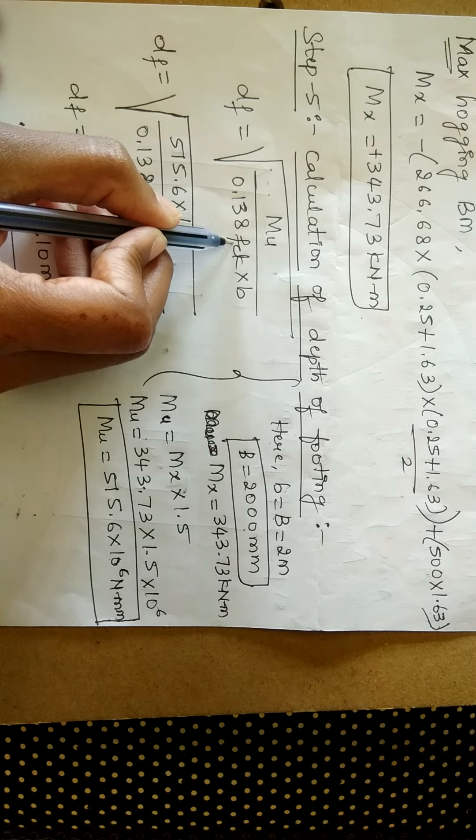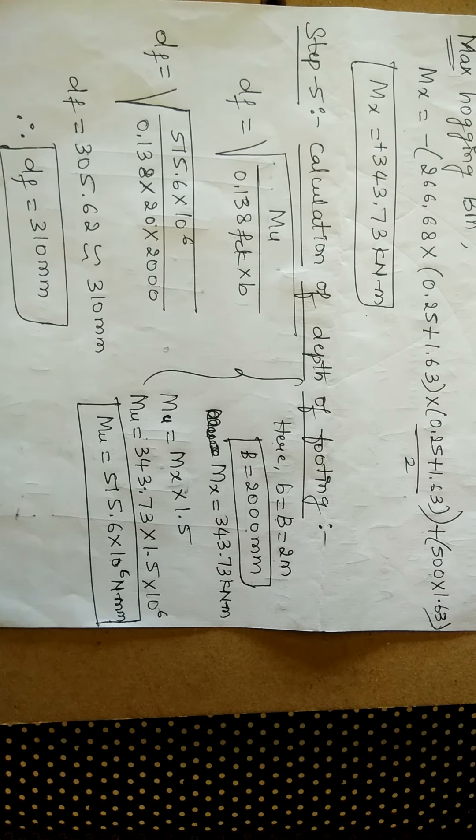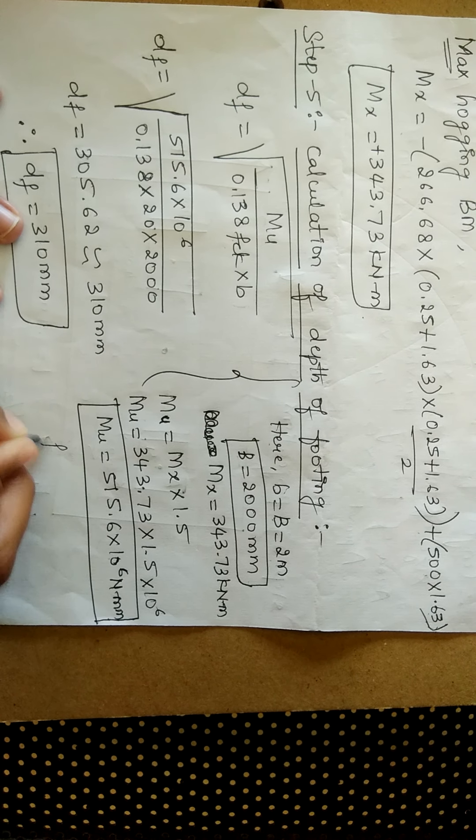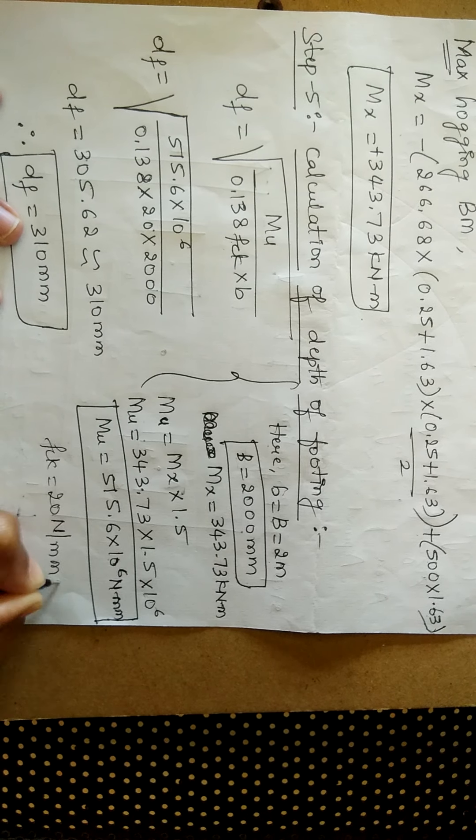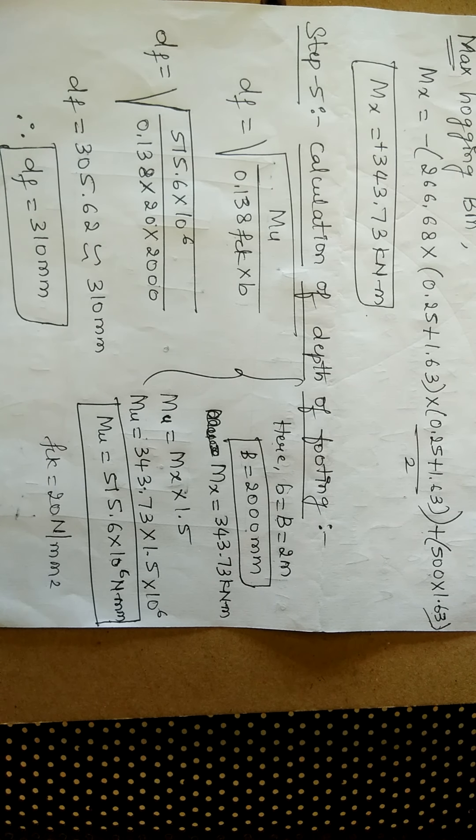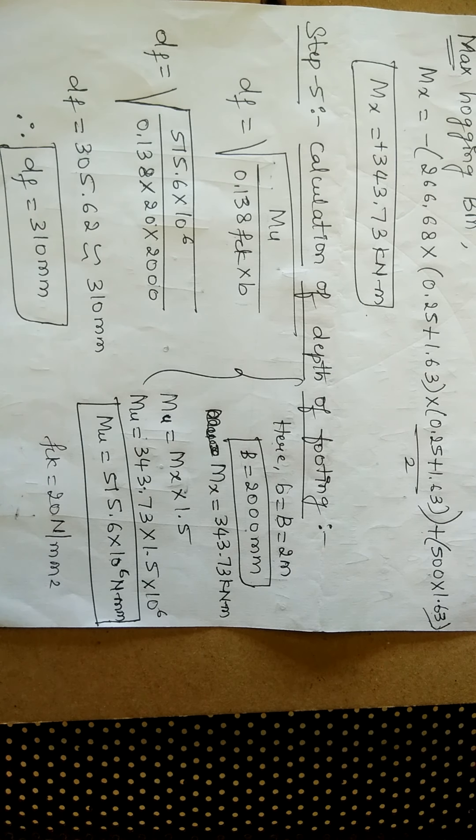Now, the grade of the concrete was given in the question itself. It is given as 20 newton per mm square. M20 grade of concrete has been given to you, for which the value of fck will be 20 newton per mm square.